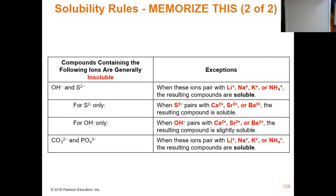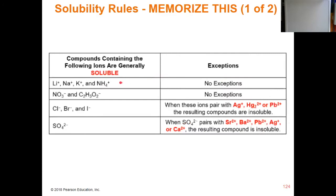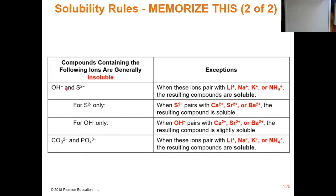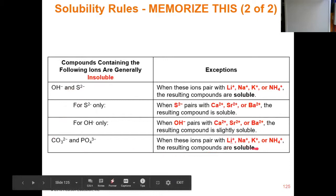Onto the insoluble table — you have four main things to focus on: the hydroxide ion, the sulfide ion, the carbonate ion, and the phosphate ion. These things are going to be insoluble most of the time, except when they're paired up with lithium, sodium, potassium, and ammonium — there are no exceptions to those pairings. For carbonate and phosphate, they're going to be soluble only when paired with those four, and everything else will be insoluble. For sulfide and hydroxide, we have to add the condition that when paired with calcium, strontium, and barium, sulfide compounds will be soluble, and calcium, strontium, and barium with hydroxide will be slightly soluble.